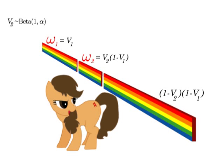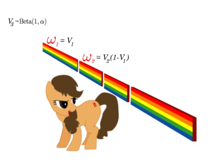At the third iteration, draw a proportion v3 for pony to break off the remaining piece. Set the third weight equal to the length of the third broken piece, which is v3 times 1 minus v2 times 1 minus v1.